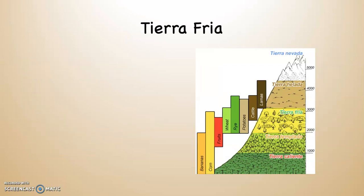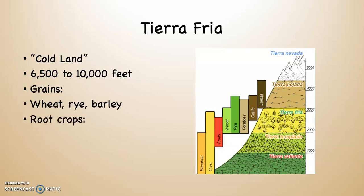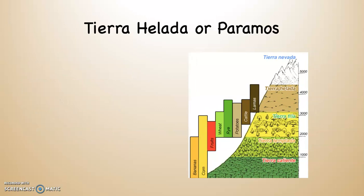Moving up further, you reach the tierra fria, which means 'cold land,' found from 6,500 feet up to about 10,000 feet. This is the commercial grain zone, including wheat, rye, and barley. In addition, it is the subsistence root crop zone, which includes potatoes, onions, garlic, and radishes. Potatoes actually originate from the Andes — this is their point of origination.